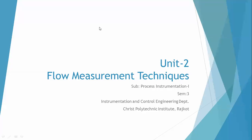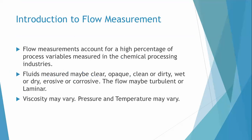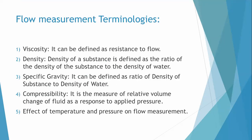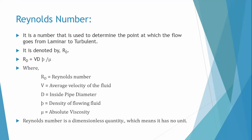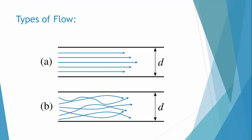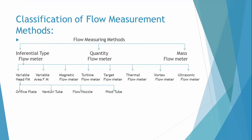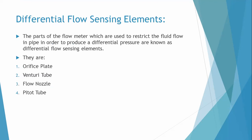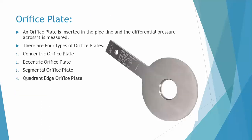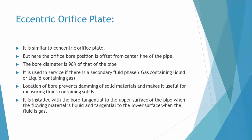In the last lecture, we started with flow measurement techniques. We covered the introduction, orifice plate, flow measurement terminologies, Reynolds number, types of flow, and the classification of flow measurement methods. We started with differential flow sensing elements, beginning with the orifice plate. The concentric orifice plate is complete, and now we will start with the eccentric orifice plate.